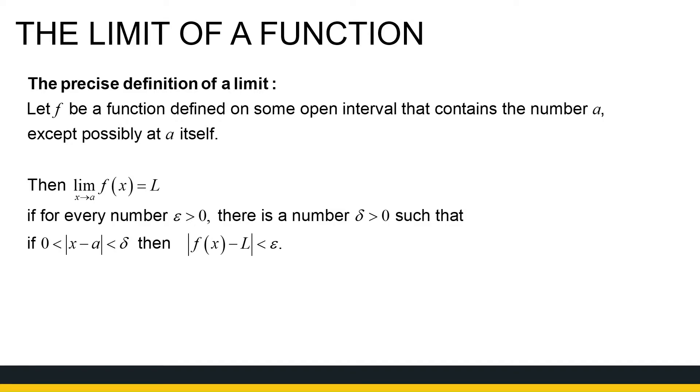But now, the precise definition is as follows. Let f be a function defined on some open interval that contains the number a, except possibly at a itself. So, f does not have to be defined at a, like we saw in this example. Then, the limit as x approaches a of f of x is the number l. So, in this case, we had 0.5.